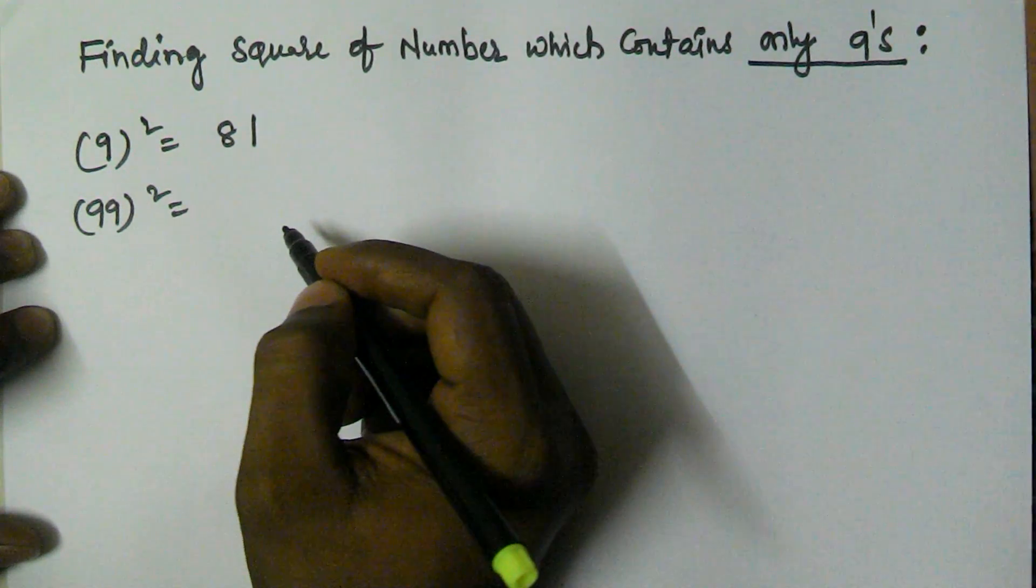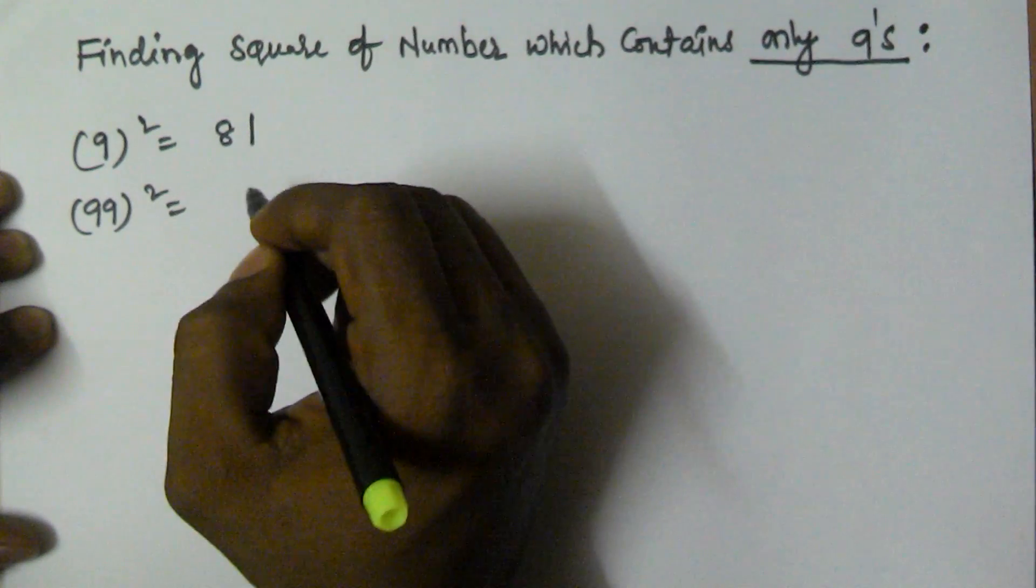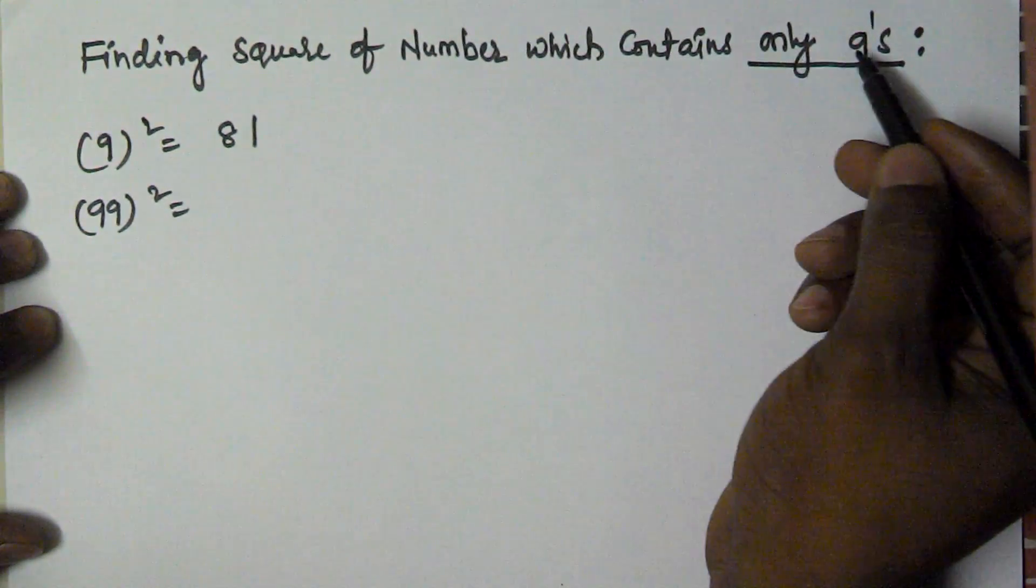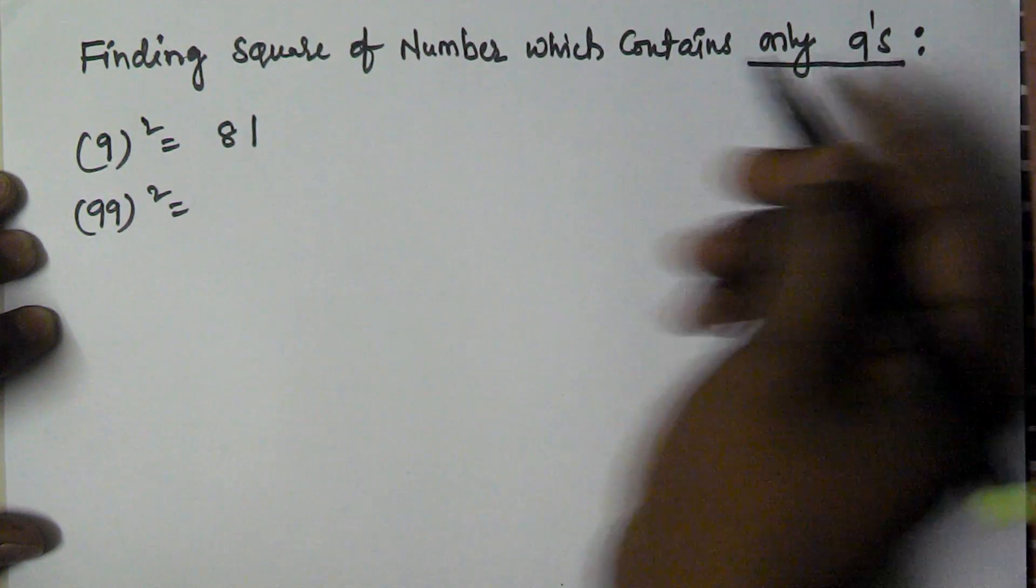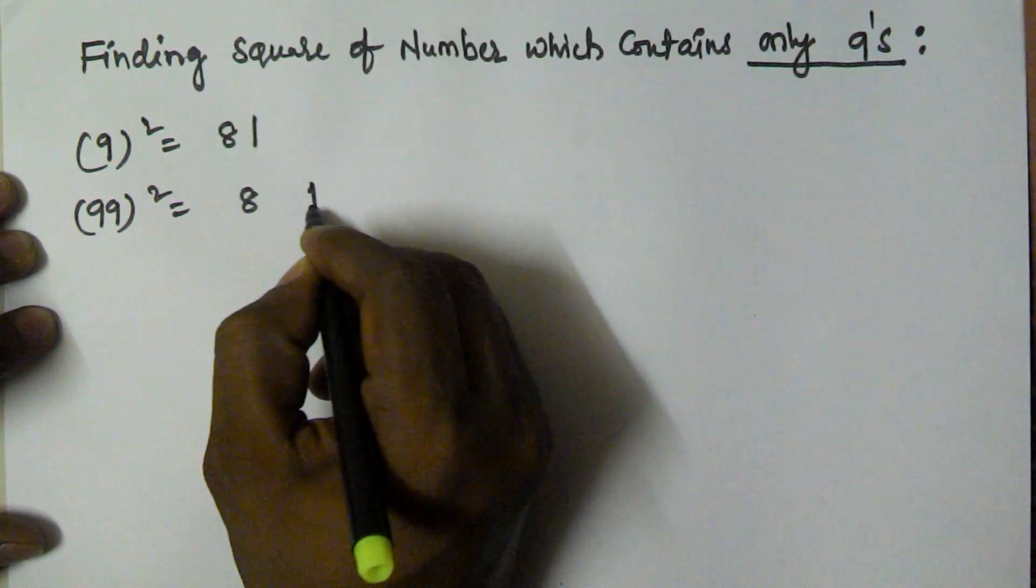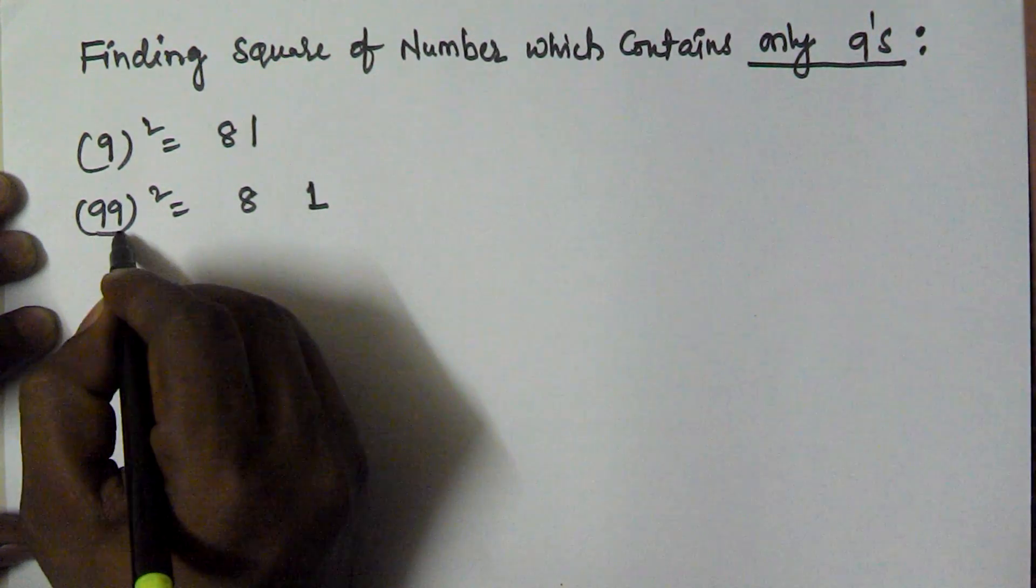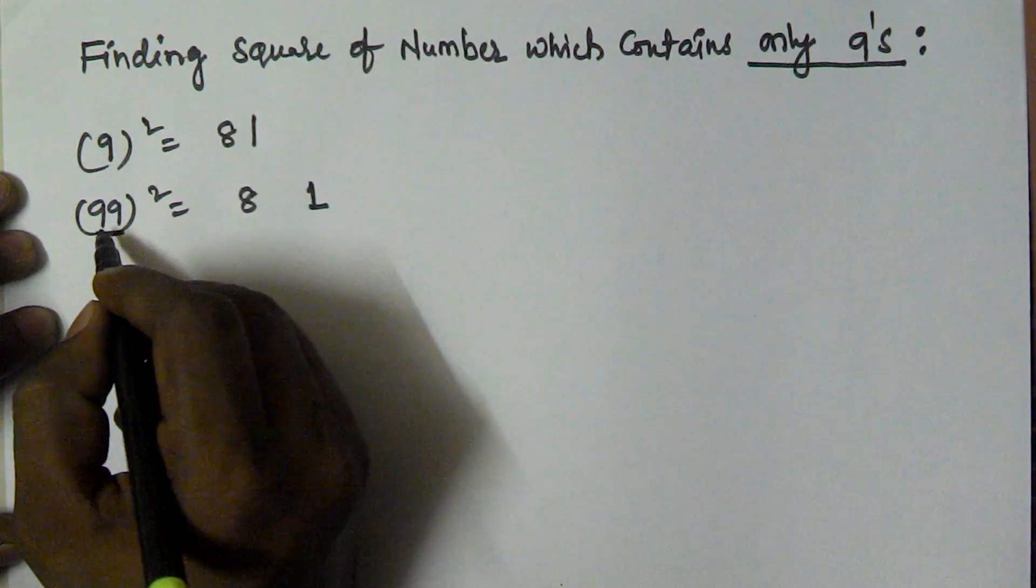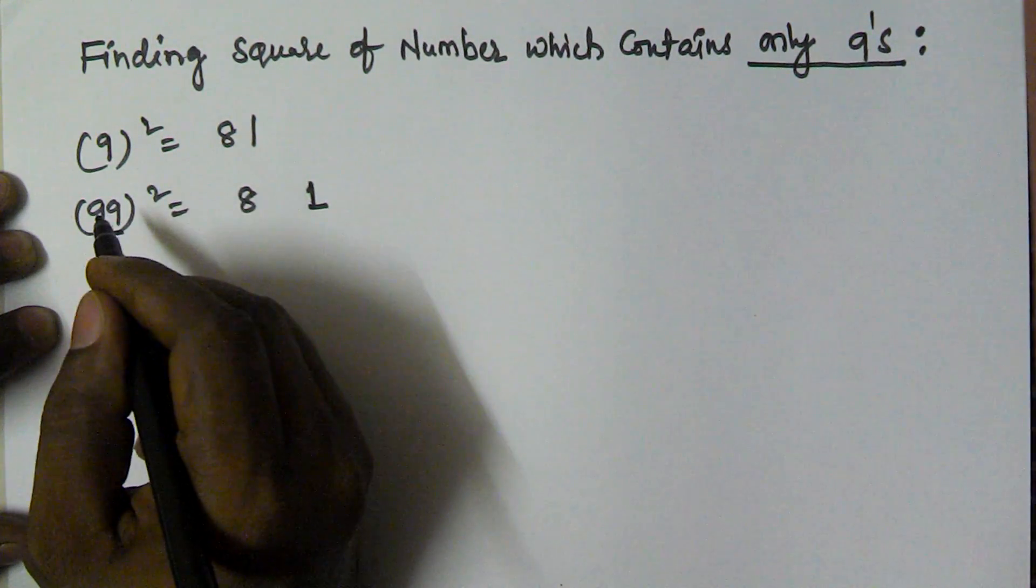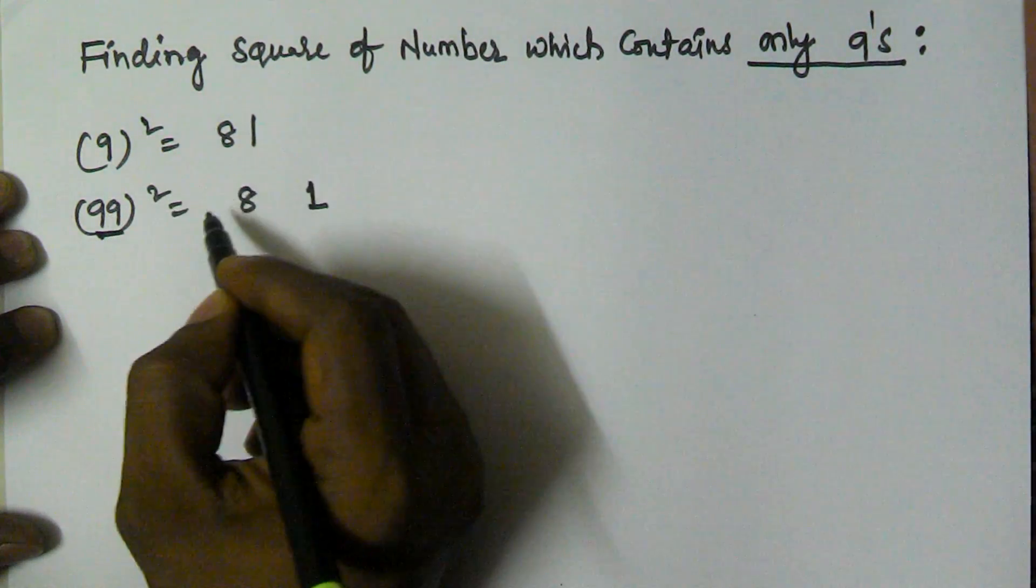In this video I'm showing you the square of numbers which contain only 9's. 9 square is 81. Here we are finding 99 square. 99 contains two 9's, so 2 minus 1 is 1.